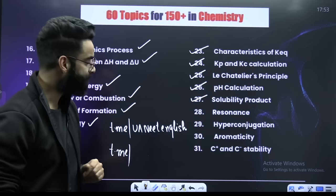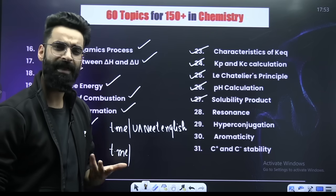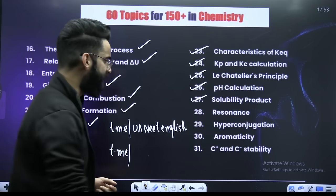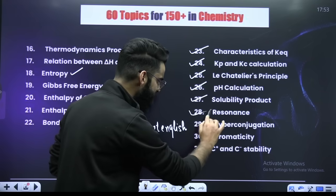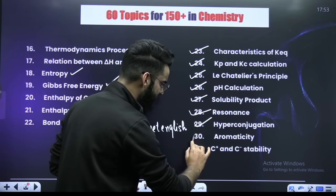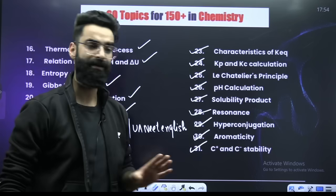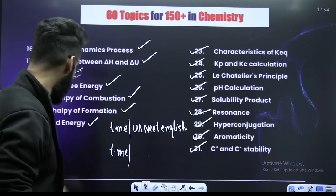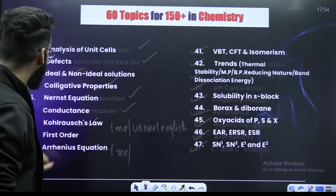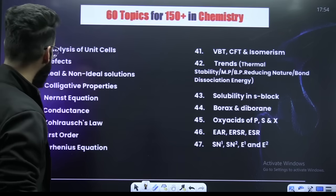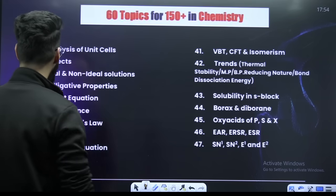Talking about general organic chemistry: resonance, hyperconjugation, aromaticity, carbocation and carbanion stability — these are the topics from the chapter general organic chemistry.